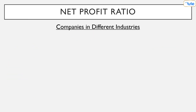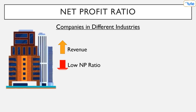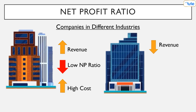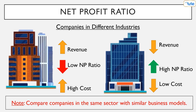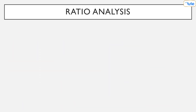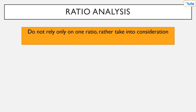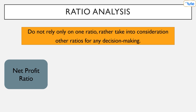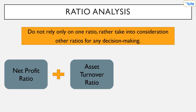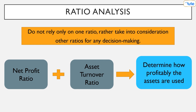This ratio can greatly differ between companies in different industries. For example, a company with high revenue can still have a low net profit ratio due to high costs, whereas another company in a different industry can have comparatively low revenue but a higher net profit ratio because of lower costs. So it is recommended to compare only companies in the same sector with similar business models. Also, do not rely only on one ratio — take into consideration other ratios for any decision making. For instance, the net profit ratio along with the asset turnover ratio can help determine how profitably the assets have been used during a particular period.